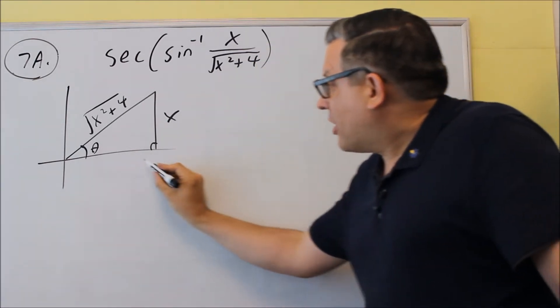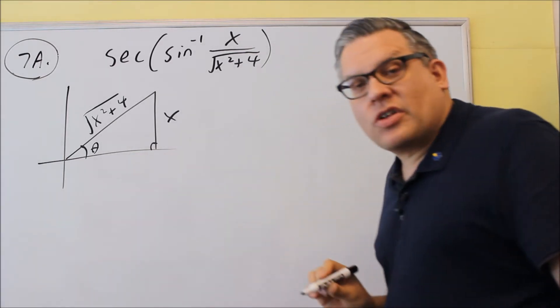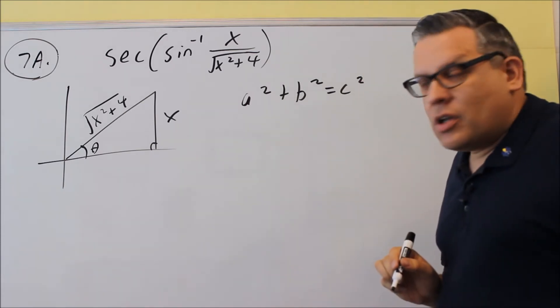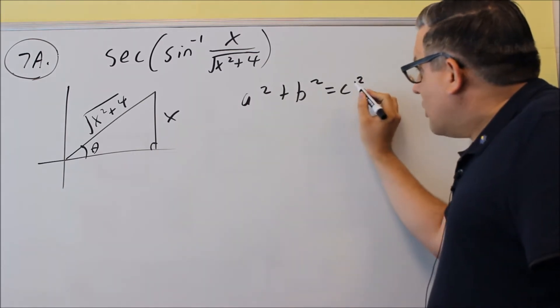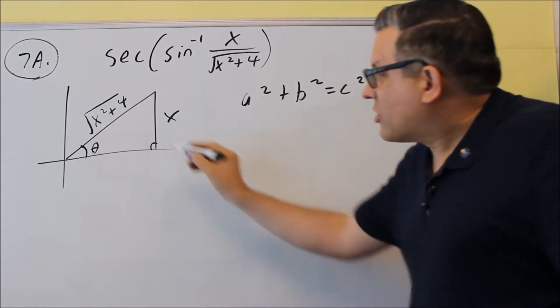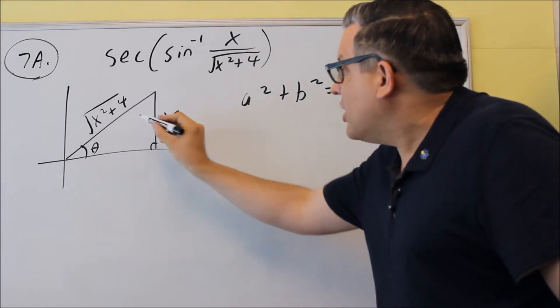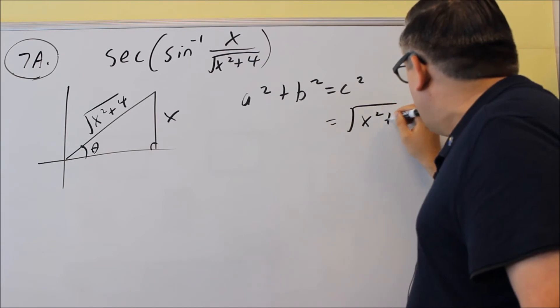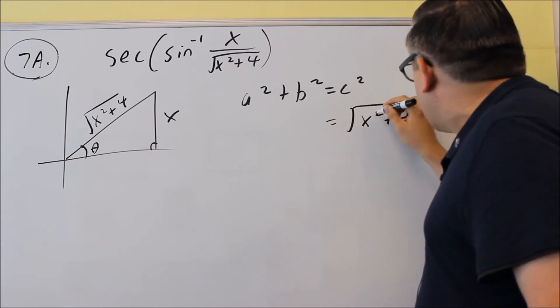Now I'm not done yet because I have to figure out what the missing side is. And I can do that by using the Pythagorean Theorem. Now your c is always the longest side of the triangle, the side opposite the right angle. So for c, I've got to put in the square root. So I have square root of x squared plus 4 that goes inside here.